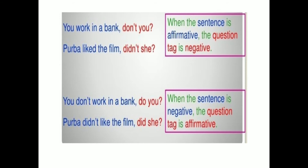For example: 'You work in a bank, don't you?' 'Baba liked the film, didn't she?' In these two examples, when the sentence is affirmative, the question tag is negative. Conversely: 'You don't work in a bank, do you?' 'Baba didn't like the film, did she?' When the sentence is negative, the question tag is affirmative.